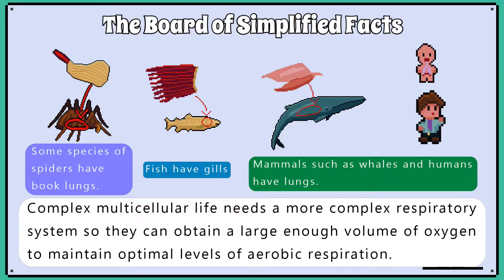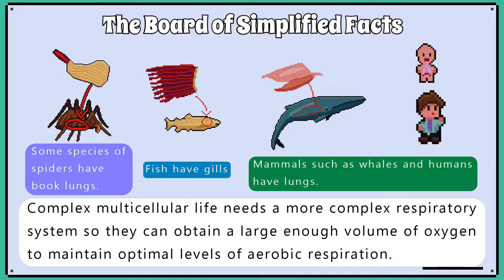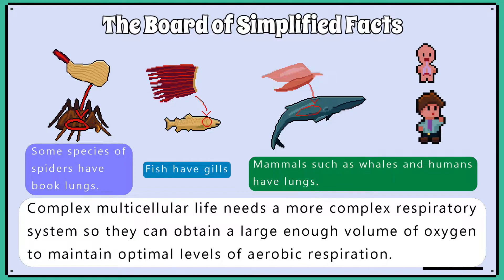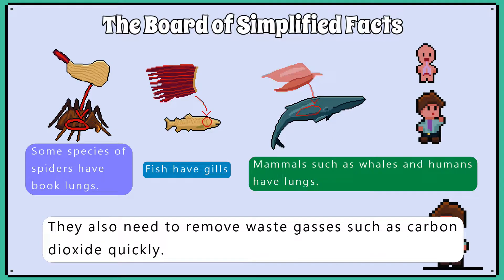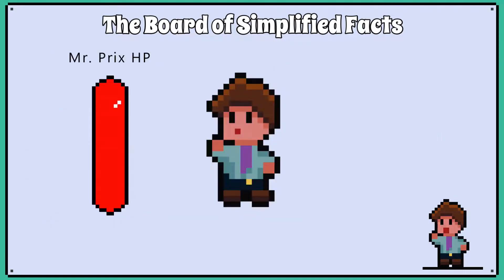Complex multicellular life needs a more complex respiratory system, so they can obtain a large enough volume of oxygen to maintain optimal levels of aerobic respiration. They also need to remove waste gases such as carbon dioxide quickly.